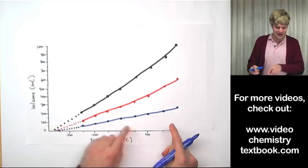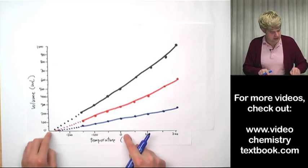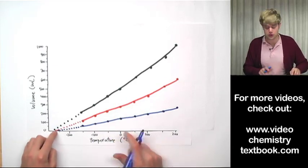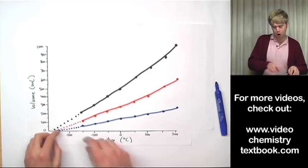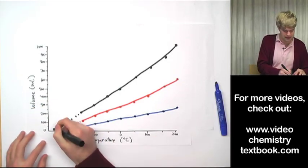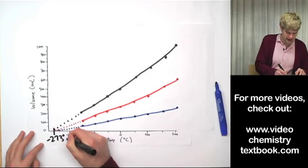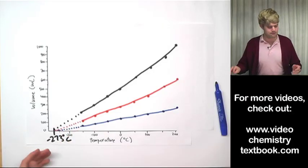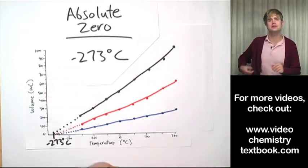And if we do that, it too hits the x-axis at the same point that all the others do when they get to zero. And it turns out that this place where all the three lines come together is negative 273 degrees Celsius. Which is what we said earlier is absolute zero.